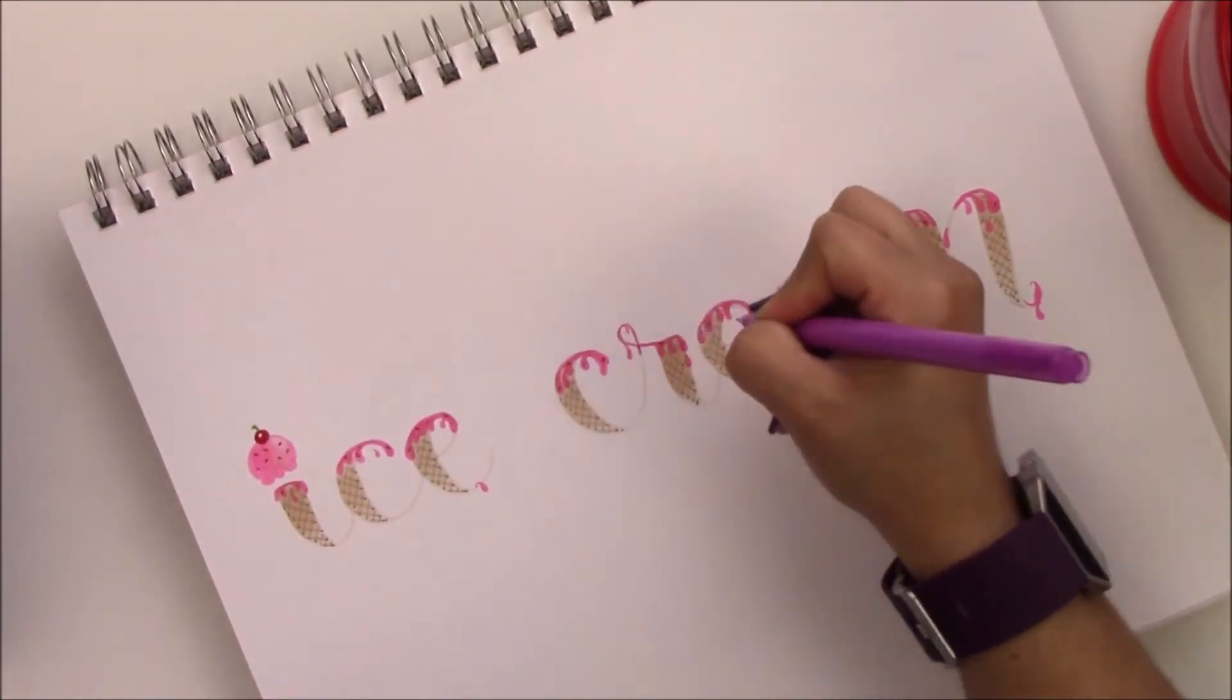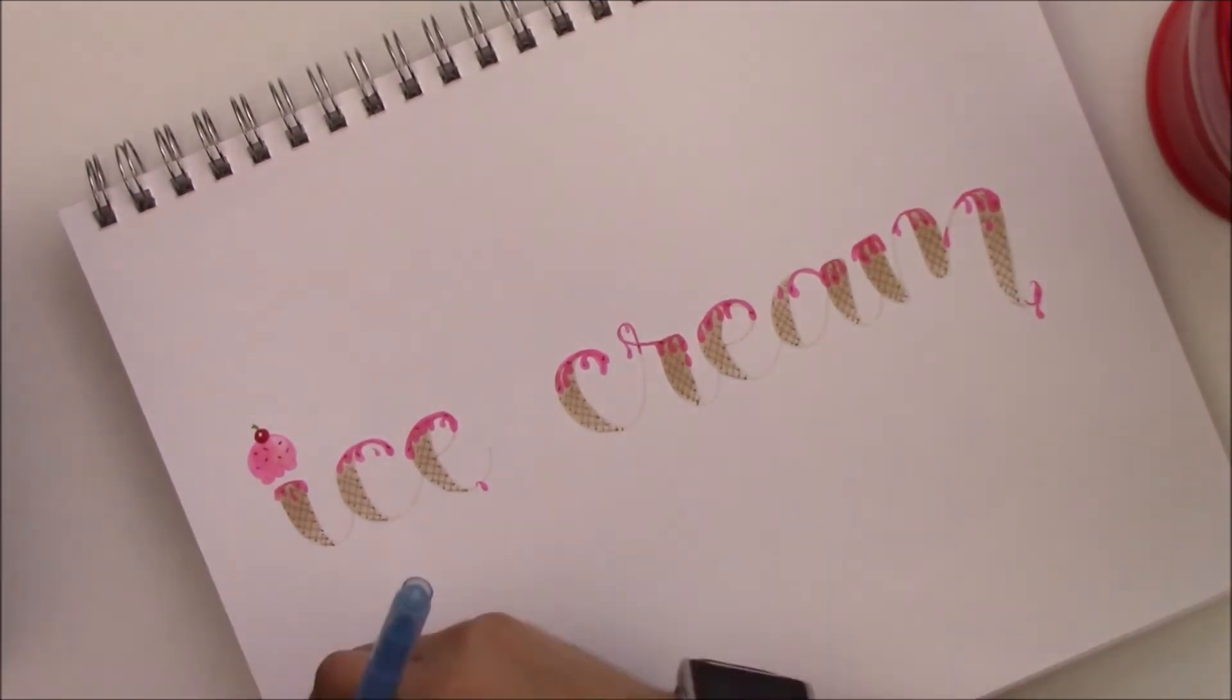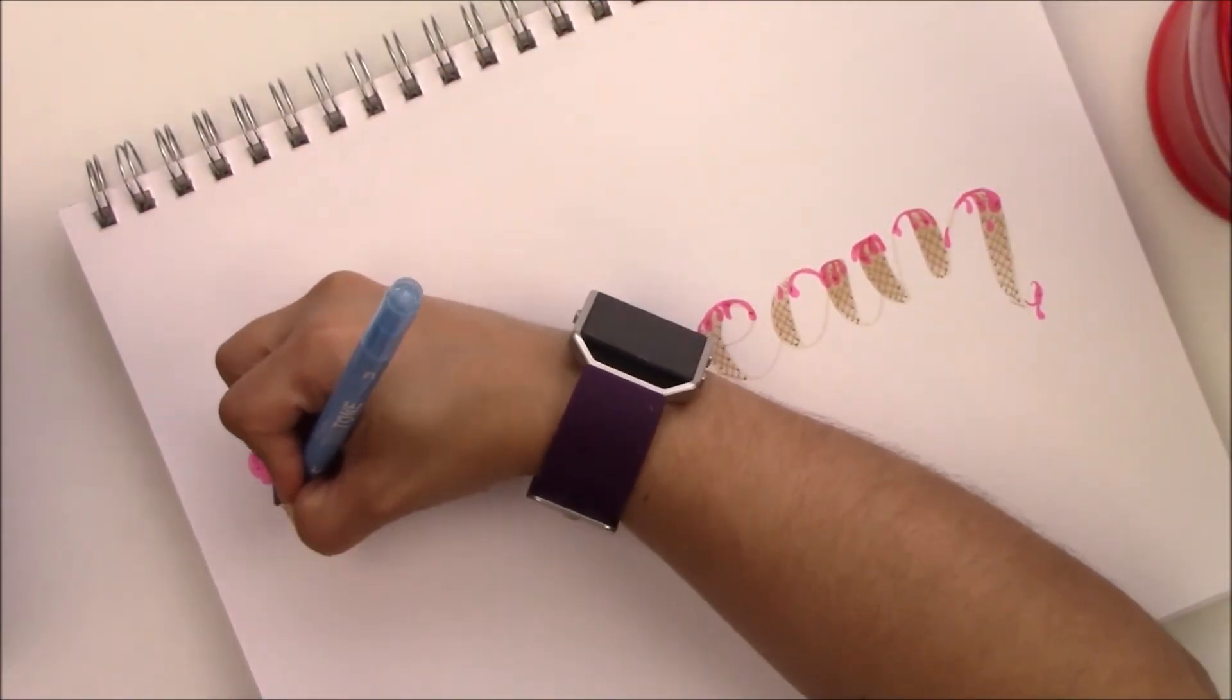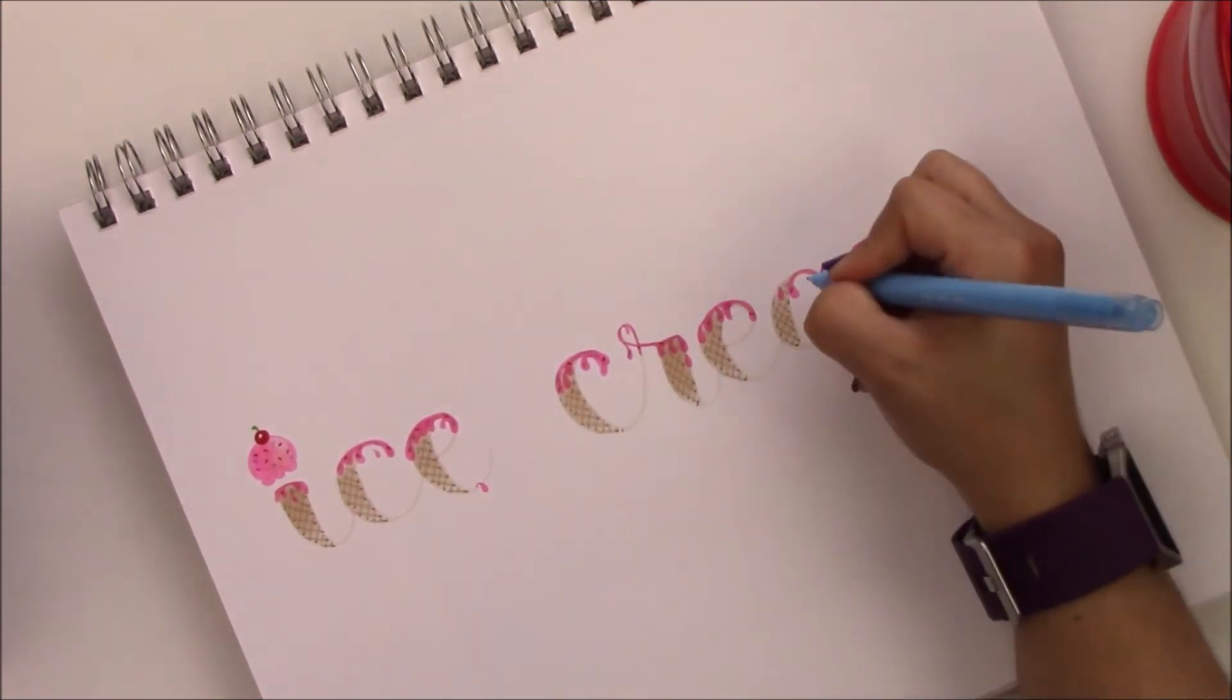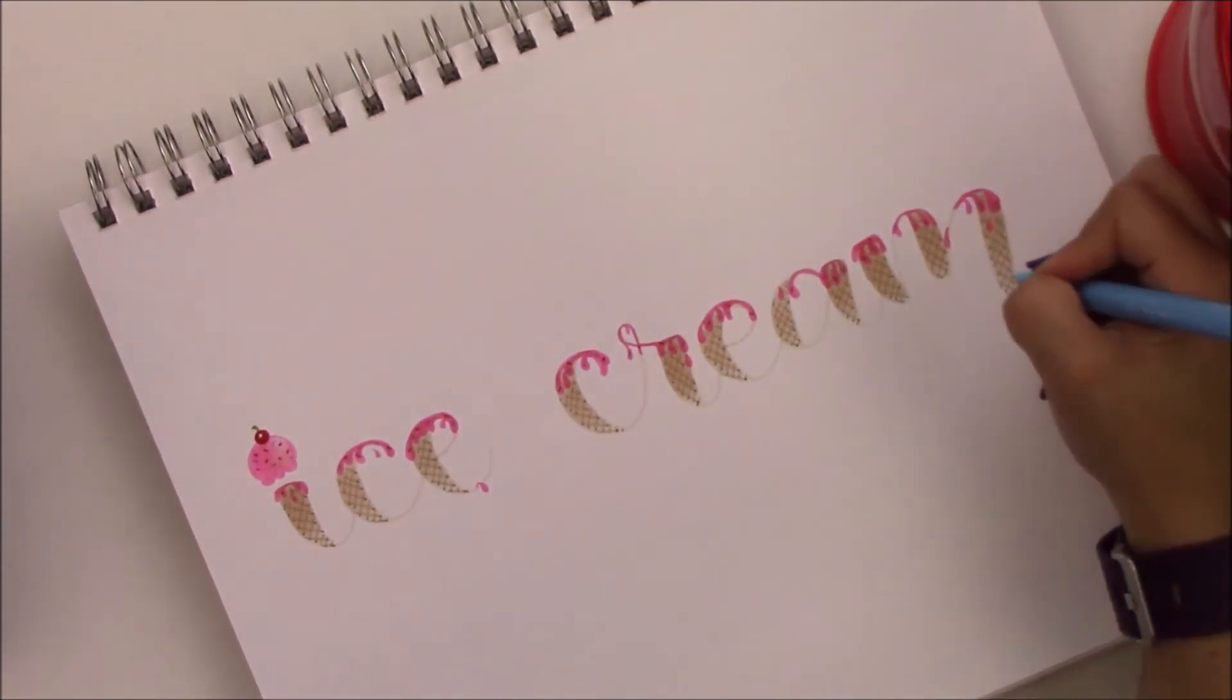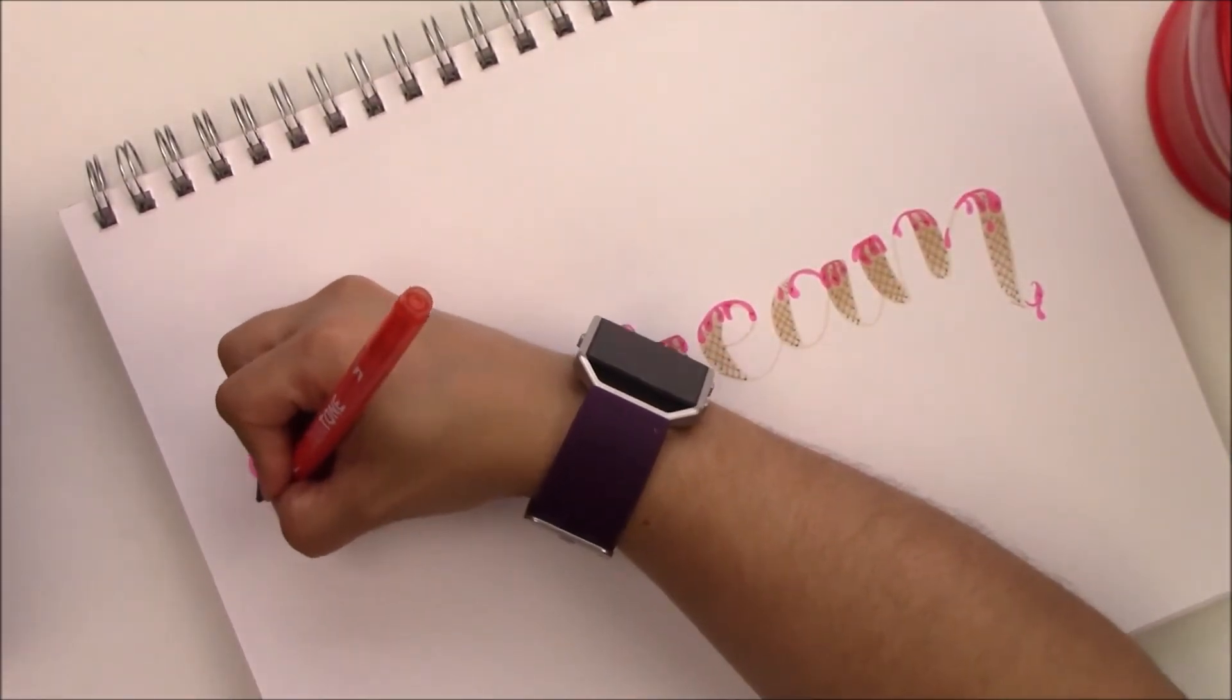You can also use the fine tip of the Tombow dual brush pen, but maybe instead of a line you want to do just a dot since the tip is a little larger. These ice cream melted ice cream spaces are a little bit small. You don't want to draw something that is way too big.